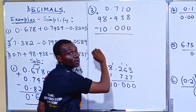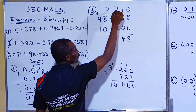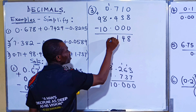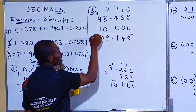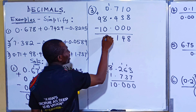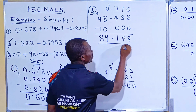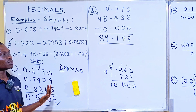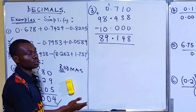Continuing: 9 minus 1 is 8. And that is the solution to that particular example. That's how to do addition and subtraction of decimals. Now let's go to the division example. I'm going to teach you something very beautiful when it comes to division of decimals — pay attention.